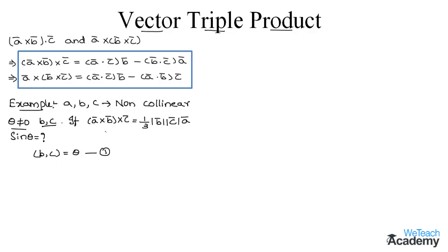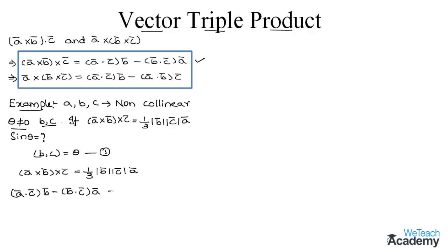Using the first formula on the left-hand side, we get (a̅ · c̅)b̅ − (b̅ · c̅)a̅. Comparing with the right-hand side, which is (1/3)|b̅||c̅|a̅, since the RHS contains only a̅ (no b̅ term), the coefficient of b̅ on the left must be zero. So we write: 0·b̅ + (1/3)(b̅ · c̅)a̅.